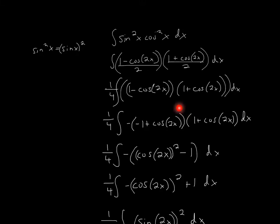Now, since I have this, if I multiply these two, I'll get cosine 2x squared minus 1.